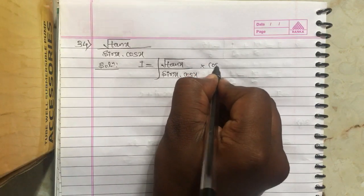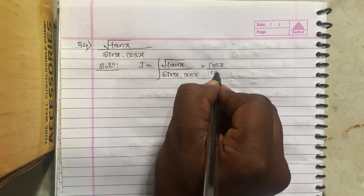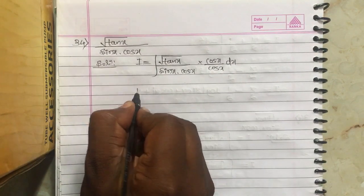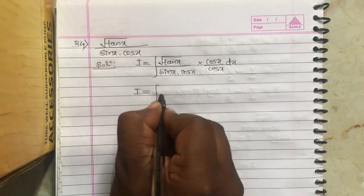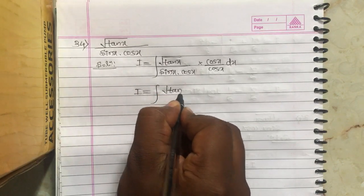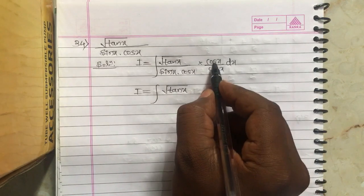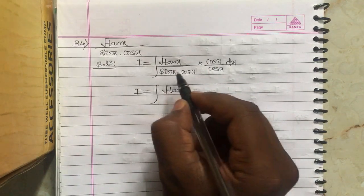Here I multiply and divide by cos x. Now this equals integral root tan x. Then cos x by sin x will be cot x.